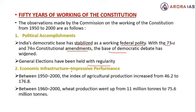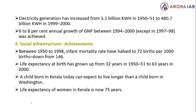Economic infrastructure में impressive performance देखने को मिलती है। 50 सालों में agriculture production का index 46.2 से बढ़कर 176.8 तक पहुँच गया। Wheat production 11 million tons से 75.6 million tons तक पहुँच गई। Electricity generation has increased from 5.1 billion to 487 billion units। Annual growth of GNP 6–8% तक पहुँच चुकी थी।